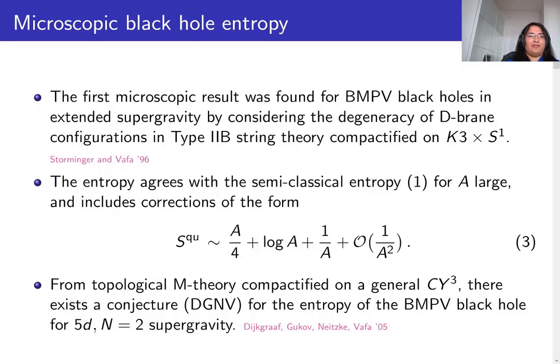The Strominger-Vafa result was the first microscopic result for BMPV black holes. It was done considering extended supergravity by looking at the degeneracy of D-brane configurations in type IIB string theory compactified on K3 times S1. The Strominger-Vafa result agreed with the semi-classical Bekenstein-Hawking entropy but also included interesting corrections — some log terms and some 1-over-A terms. Similarly, there exists a conjecture by DGNV for the entropy of BMPV black holes for 5-dimensional N=2 supergravity, coming from topological M-theory compactified on a general Calabi-Yau 3-manifold.